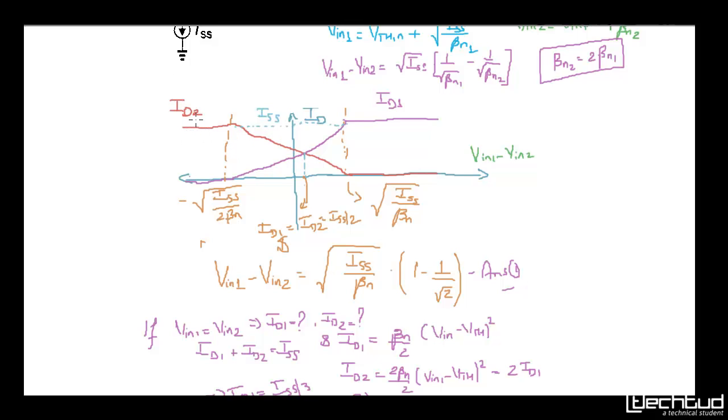So definitely the current that it will pass will be more for the same input. So what we are seeing here is that vin1 to get the same current ISS by 2, vin1 will have to be more compared to vin2. You are getting what I am saying.